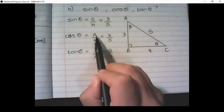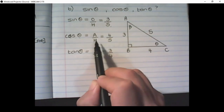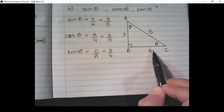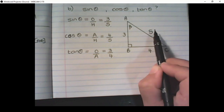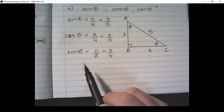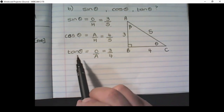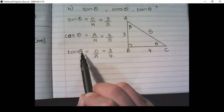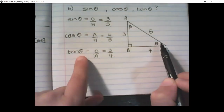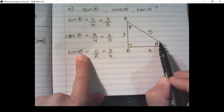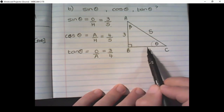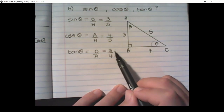Cosine of theta is adjacent over the hypotenuse. Starting again at theta, the adjacent side is 4 cm and the hypotenuse is 5 cm, so it is 4 over 5. Tan of theta is the opposite side over the adjacent side. Starting from theta, the opposite side is 3 and the adjacent side is 4, so the ratio is 3 over 4.